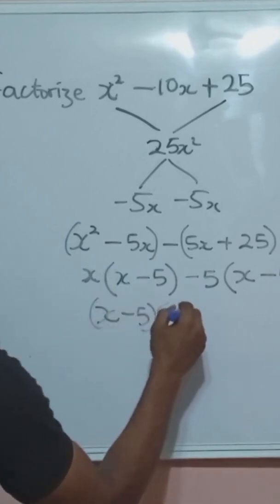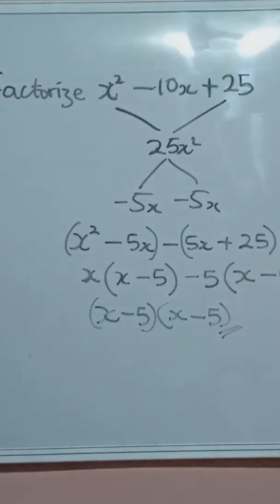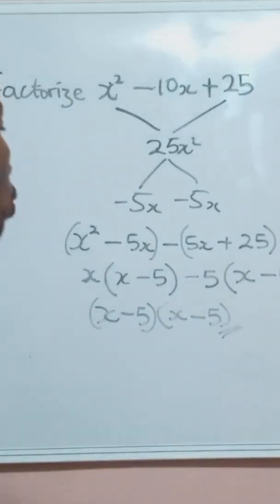So you can see we have our terms as x minus 5 and x minus 5. Those are the two factors of our equation.